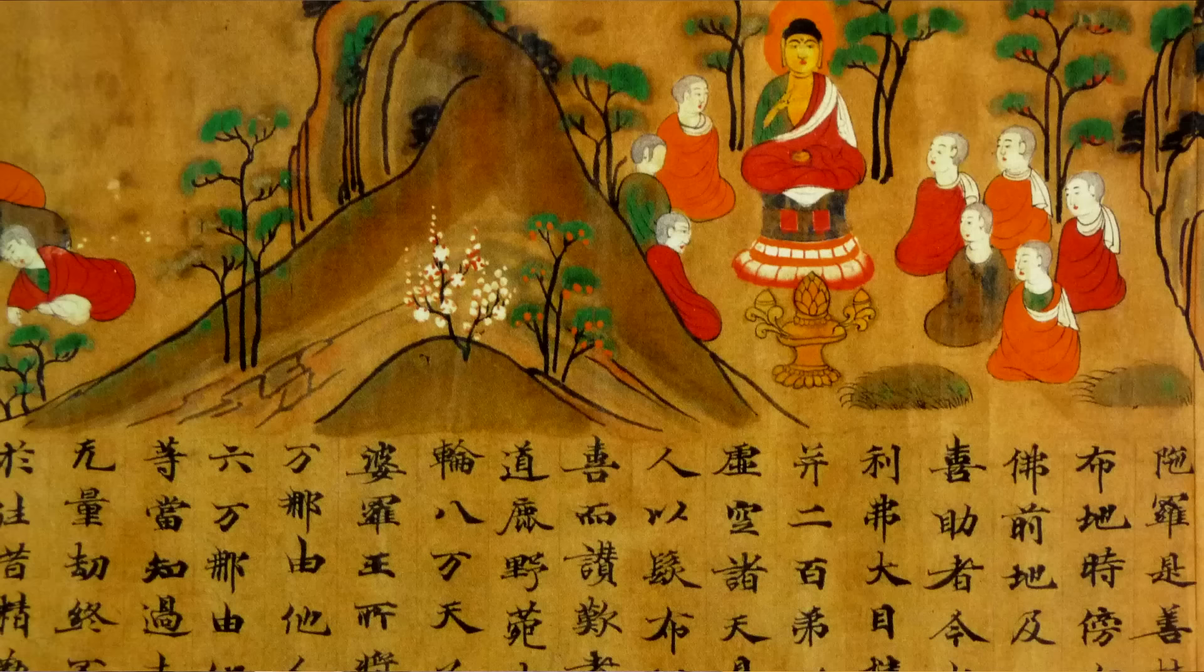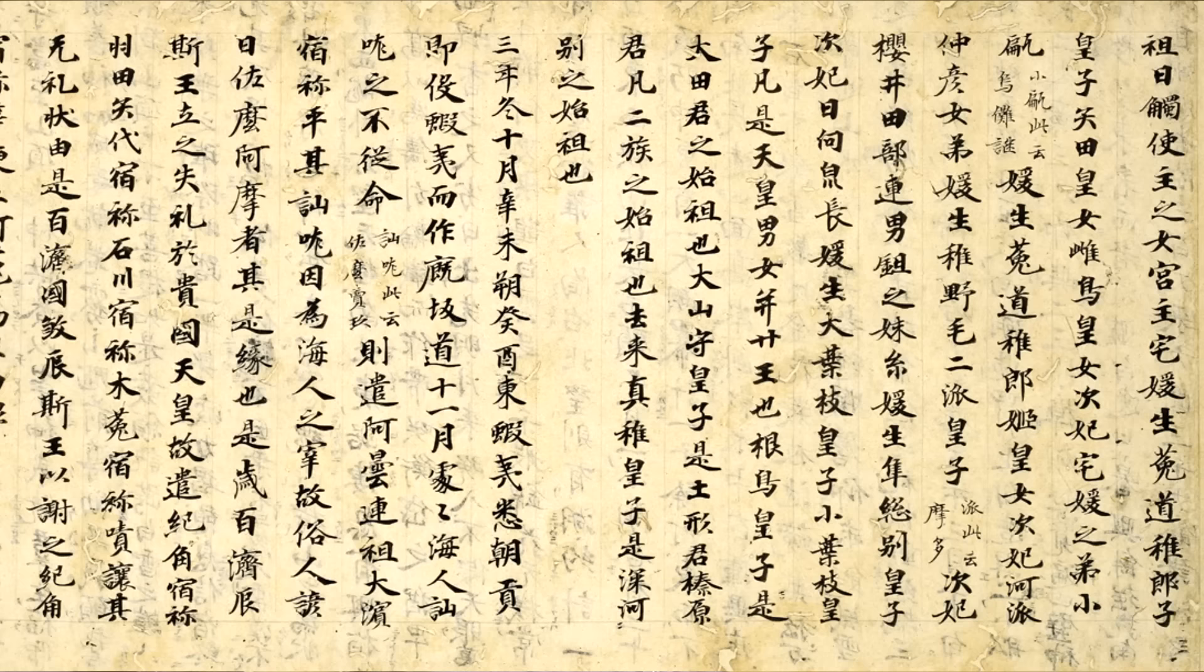Japanese originally had no written form, so Chinese began to be used as the literary language and as the language of science and of religion. Chinese vocabulary began to be borrowed into Japanese, and the Chinese writing system was gradually adapted to fit the Japanese language. So not only were vocabulary borrowed, but the Chinese characters that represent them were also adopted.